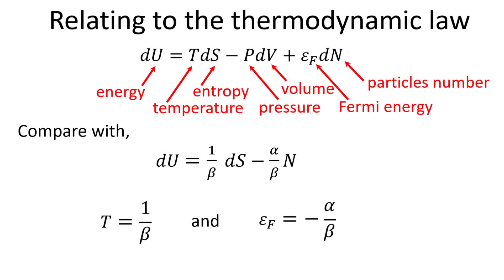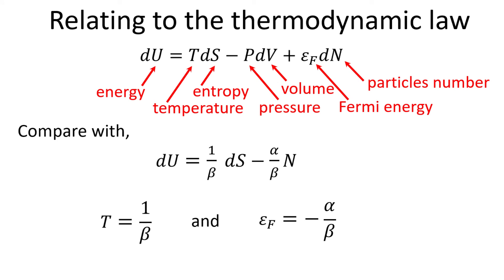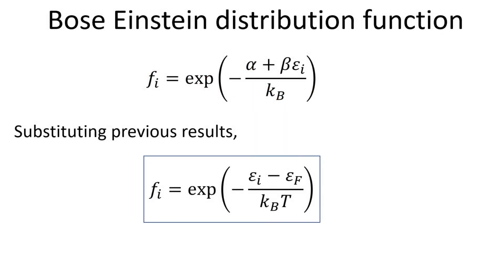We recall the well-known thermodynamics law. A quick comparison to our microscopic expression of the total energy differential to the thermodynamics law allows us to relate temperature T to 1 over beta, and the Fermi energy to the minus of alpha divided by beta. With this, we can easily determine beta to be 1 over temperature T, and alpha to be minus the Fermi energy divided by T. This then allows us to arrive at the final expression of the classical Maxwell-Boltzmann distribution function.